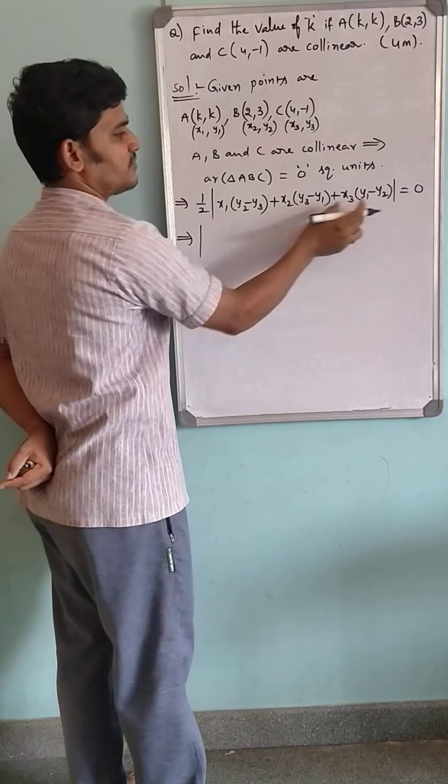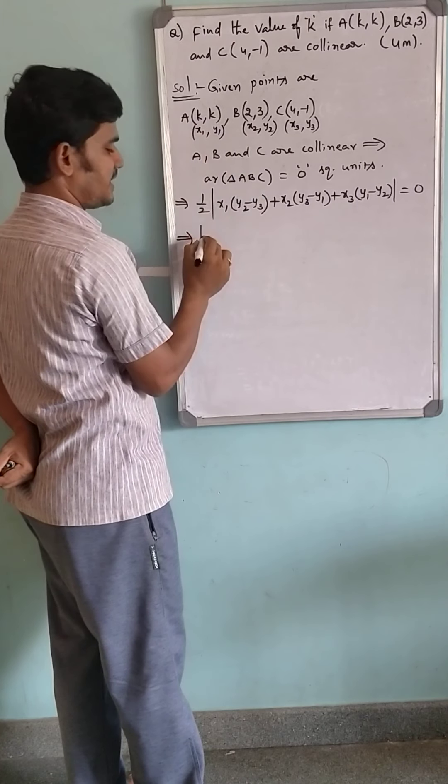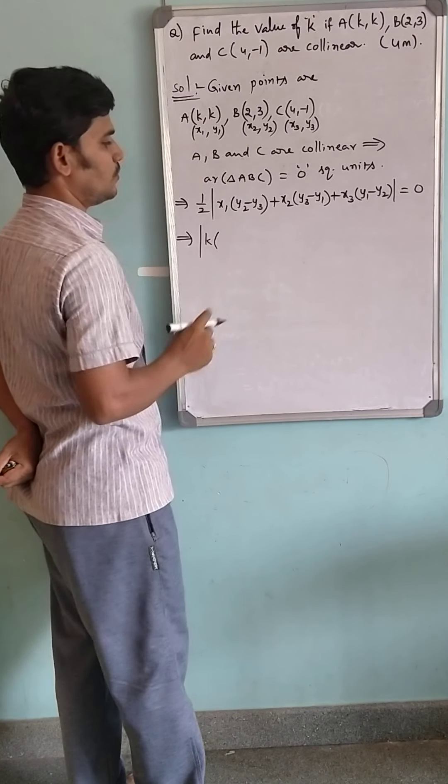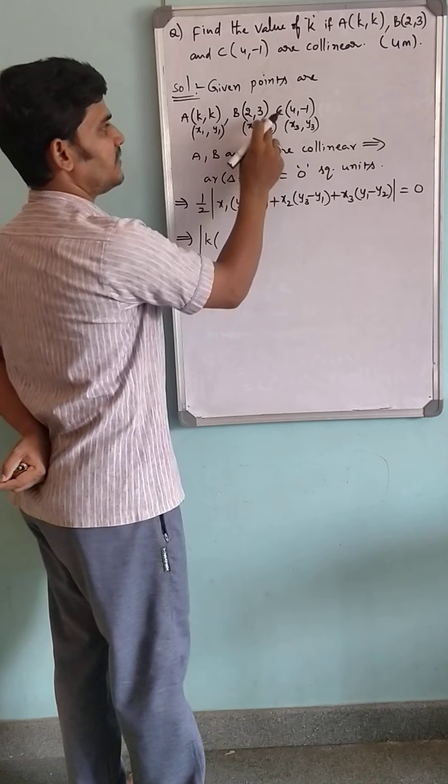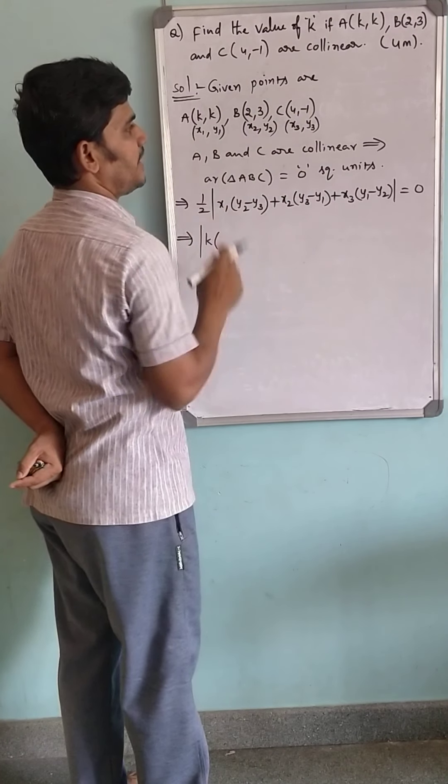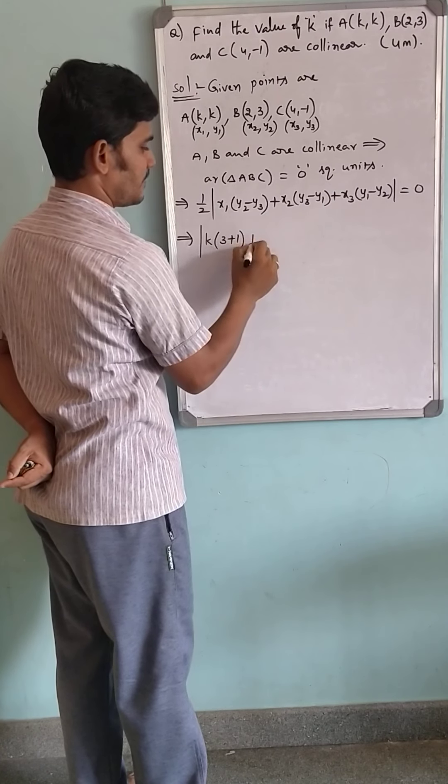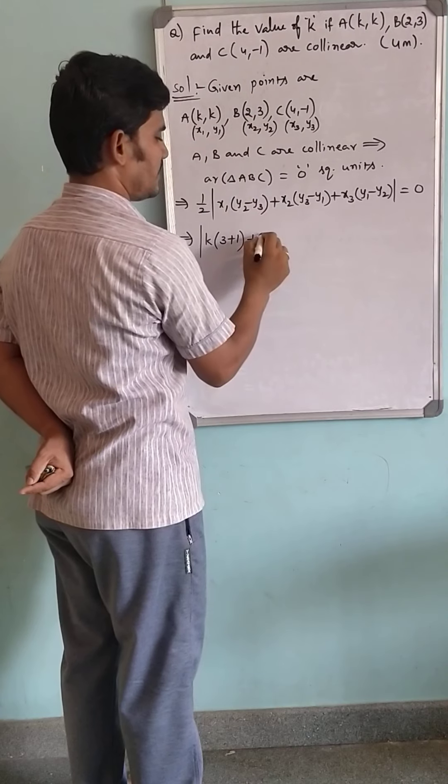Let us substitute the values of coordinates. X1, that is K, into Y2 minus Y3, the difference of these two coordinates: 3 minus (-1) becomes 3 plus 1. Plus X2, the second X coordinate, 2 into the difference of remaining two successive Y coordinates: -1 minus K.